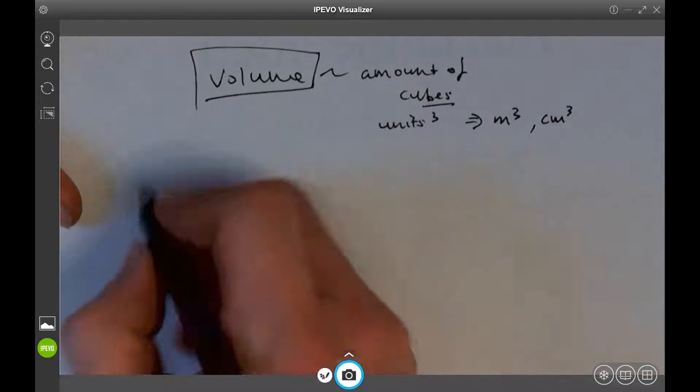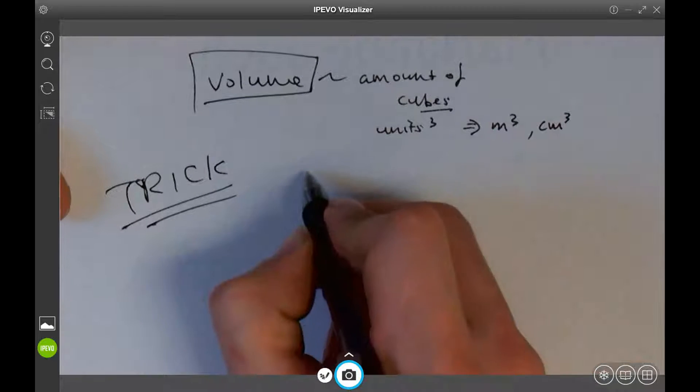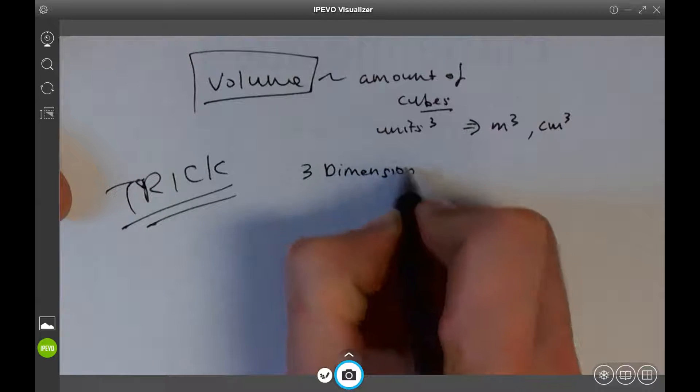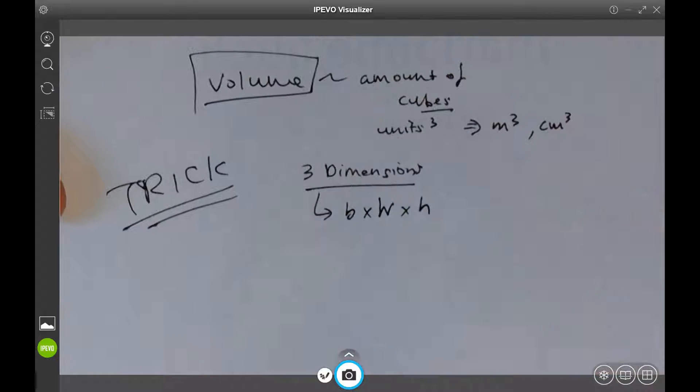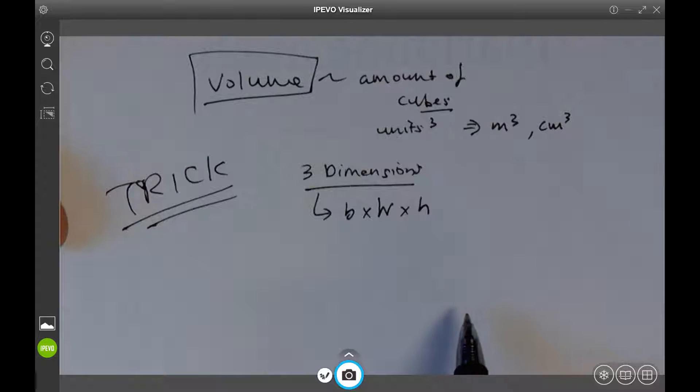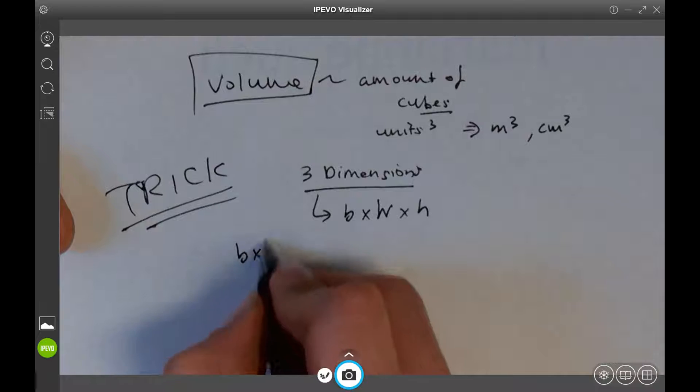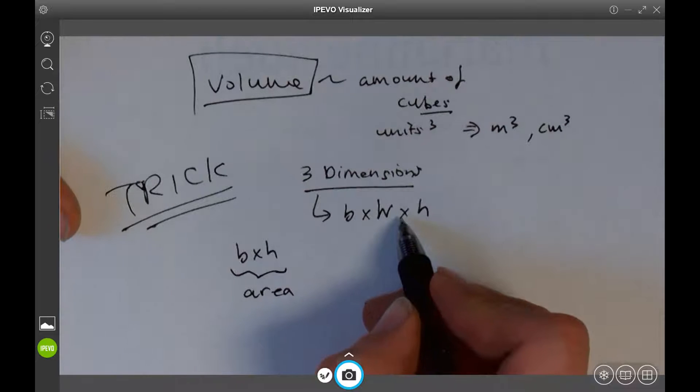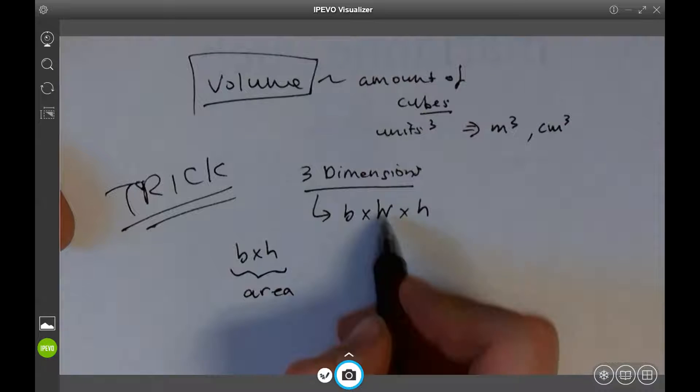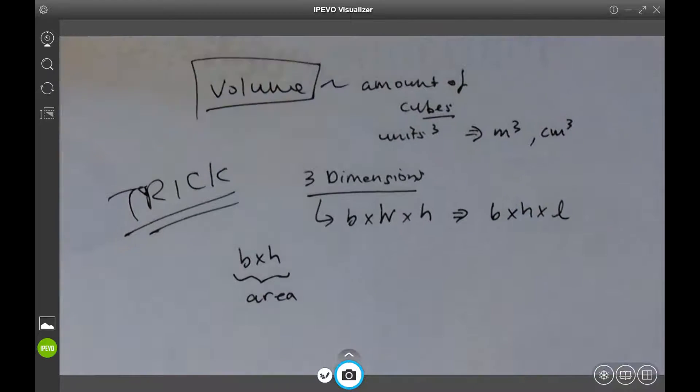I want to show you a trick to how to solve these problems. The trick is to remember volume can be solved with three dimensions: base times width times height. Doesn't really matter the order. But you can also simplify this by remembering base times height is actually area, and then width. Sometimes width is called length as well, so these are just different names. Base times height times length or width, doesn't really matter.